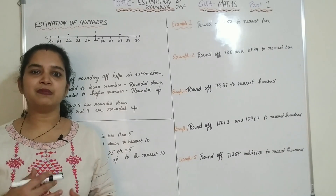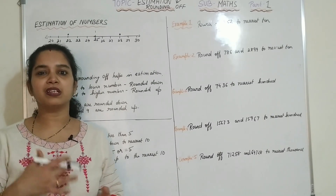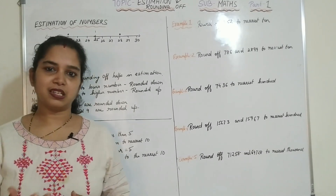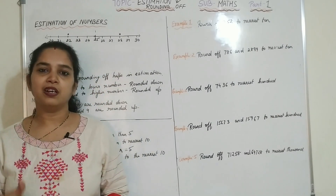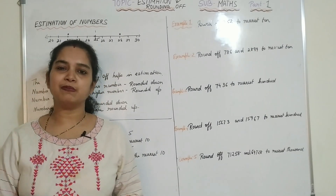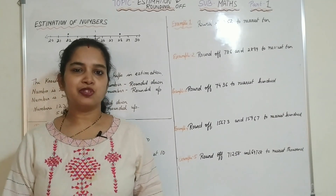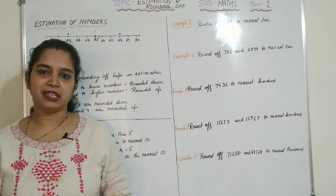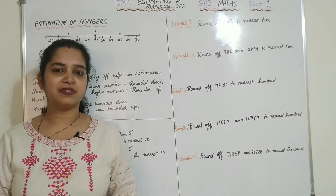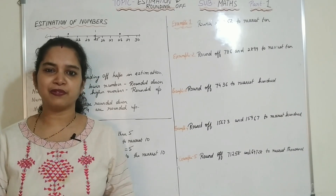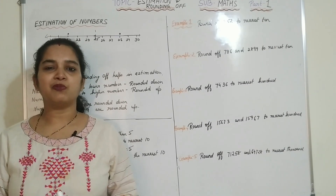So what do you mean by estimation? Estimation is to estimate. It's not the actual number but you are estimating or just guessing that it will be near to correct. For example, when you go outside for a trip and while returning back everybody in your family is very tired and they want to return back and relax at home. In that case you ask your daddy or mother how much distance more is there to travel. So your father gives an estimation — okay, it is 25 kilometers or 50 kilometers. So it is just an estimation, not the actual kilometers left.